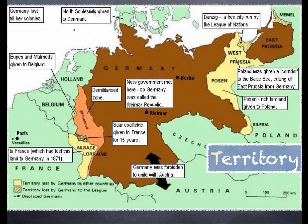Now the territorial aspects of the Treaty of Versailles. Germany did lose all of her colonies, but Britain and France didn't simply add them to their empires. They became something known as Mandates - territories temporarily run by Britain and France until they were ready for independence, though in reality Britain and France effectively did get these as colonies. North Schleswig was given to Denmark after a plebiscite; most people there voted to join Denmark.